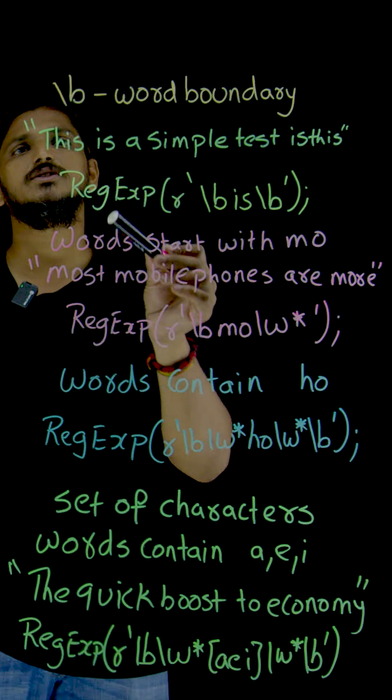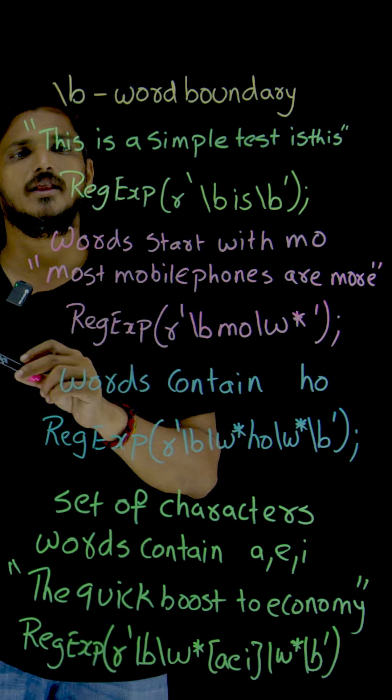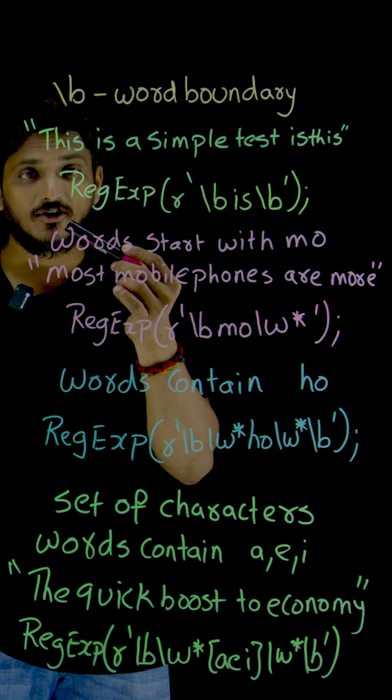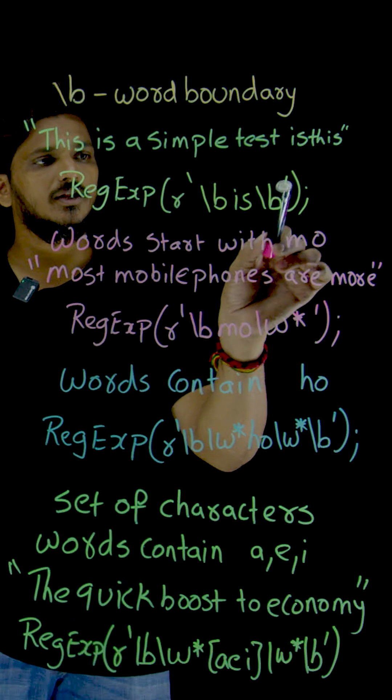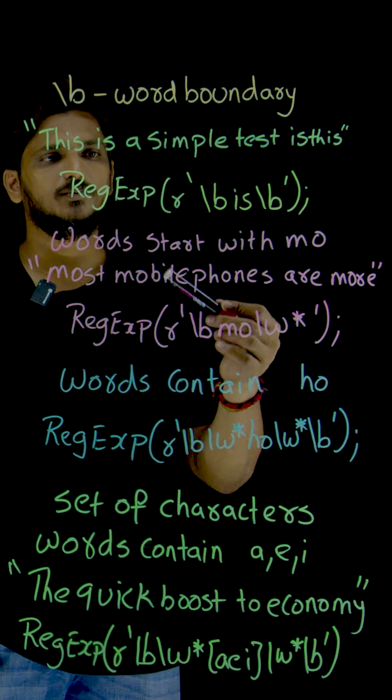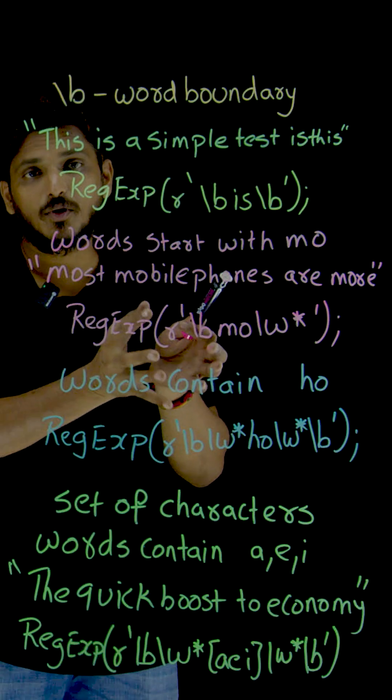You have to identify 'is' as a word. In that situation, slash b is going to be used. To write the regular expression to identify the word 'is', in these quotations, we write the expression slash b, which means the starting of the word boundary.